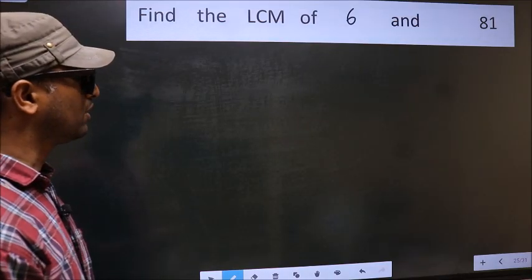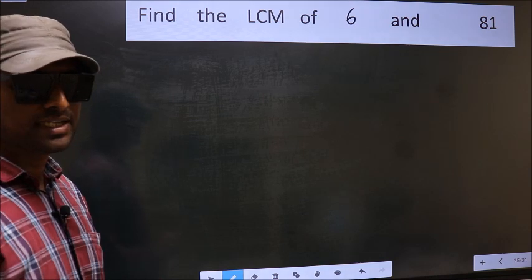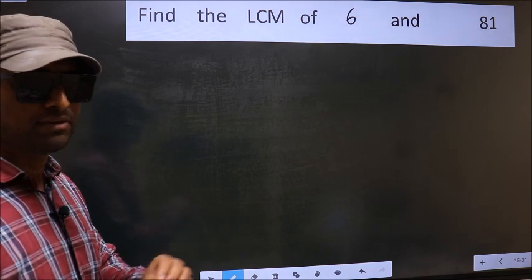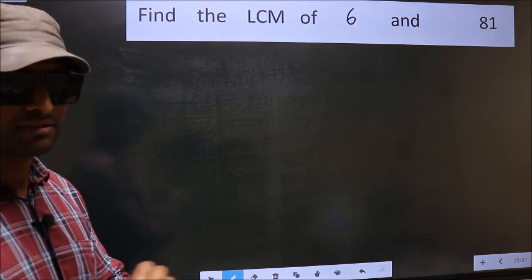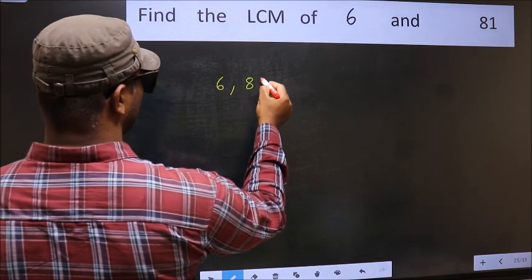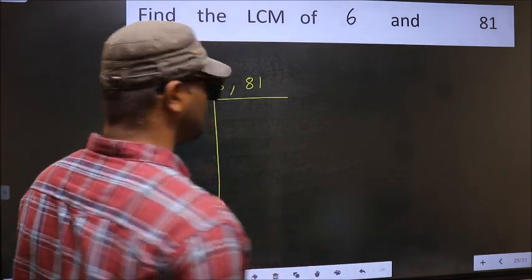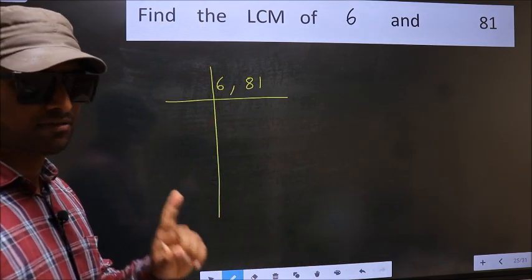Find the LCM of 6 and 81. To find the LCM, we should frame it in this way. Write 6, 81. This is your step 1.